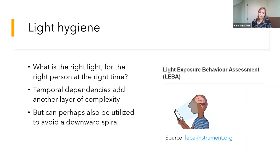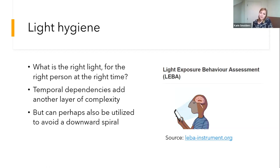One of the main questions is: what is the right light for the right person at the right time? This may vary between persons, and may also vary as a function of time of day, as well as the behavior of participants in terms of sleep, movement within the building, and levels of vitality. Insights into temporal dependency may add an additional layer of complexity, but may also be utilized to avoid a downward spiral — we saw that when participants were exposed to more light they felt more vital, and when they felt more vital they sought more light. In that sense, interventions might also facilitate long-term benefits, which strongly relates to healthy light hygiene.